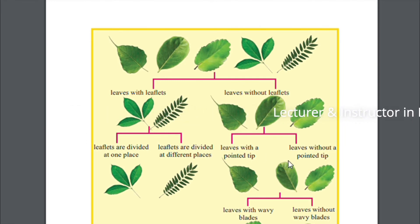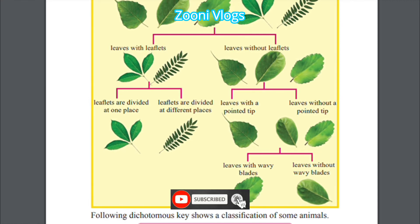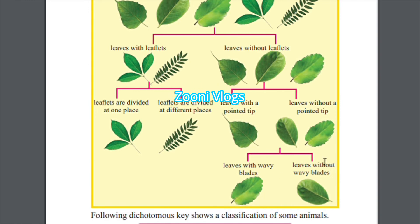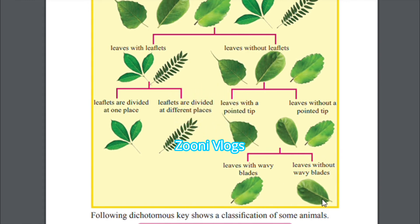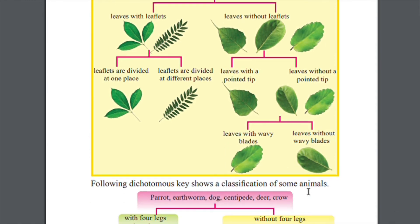Leaves without a pointed tip like a bore leaf, leaves with wavy blades, and leaves without wavy blades like a jack leaf — these are examples of how leaves are classified using a dichotomous key.